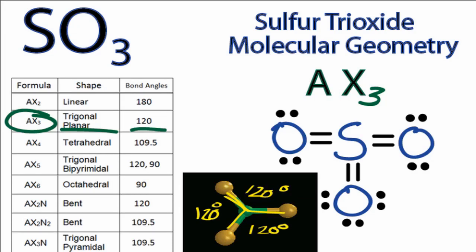So SO3 has a molecular geometry, or shape, of trigonal planar, and those bond angles are 120 degrees. So that's it. That's the molecular geometry for SO3. This is Dr. B, and thanks for watching.